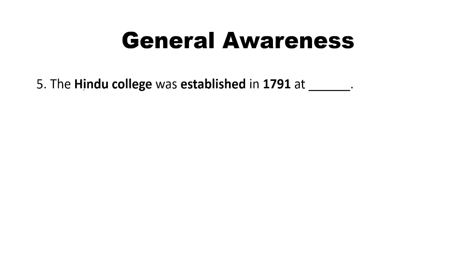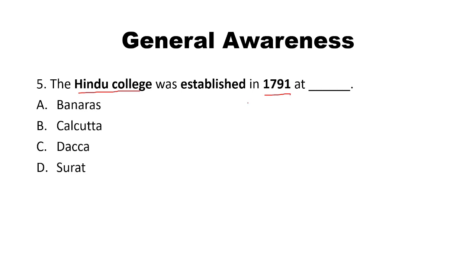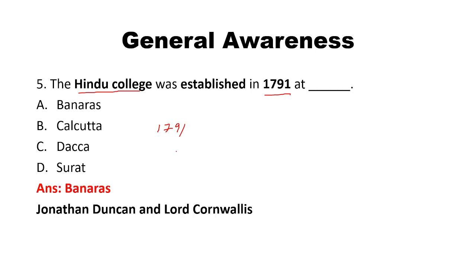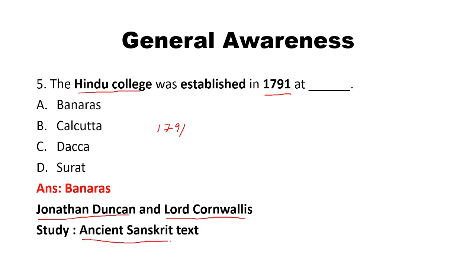The Hindu College was established in the year 1791. Options: Banaras, Kolkata, Dhaka, Surat. The answer is Banaras. The founder was Jonathan Duncan with the support of Lord Cornwallis. Hindu College was established in the year 1791 at Banaras to study ancient Sanskrit texts. The place, who established it, and its purpose are all important for the exam.